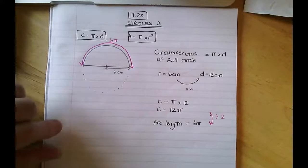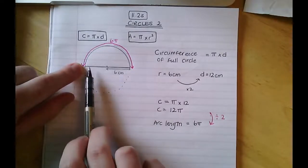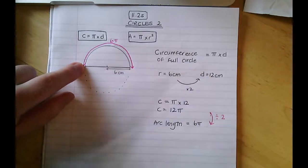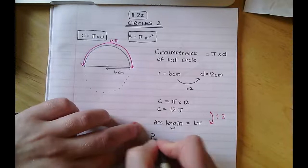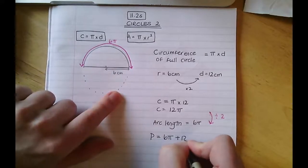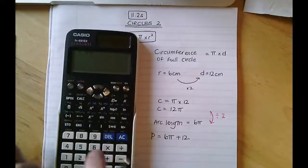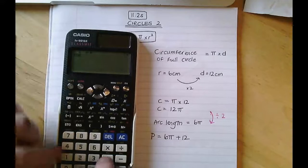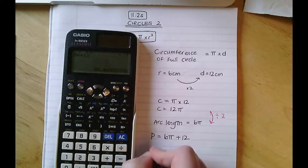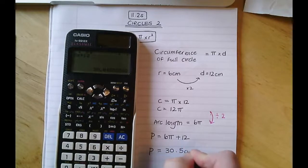This is a bit that a lot of people often forget. We've got the arc of 6 pi, but that's not our final answer because we want the perimeter. We need to add the diameter — which is 12 centimetres. So the perimeter is 6 pi plus 12. Using our calculator, 6 pi plus 12 gives 30.8495..., so to one decimal place the perimeter is 30.5 centimetres.